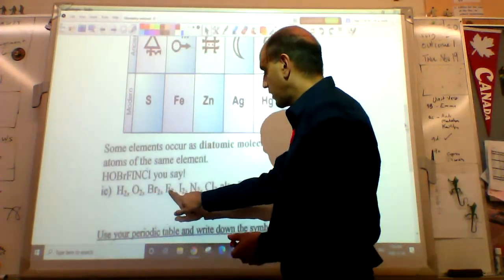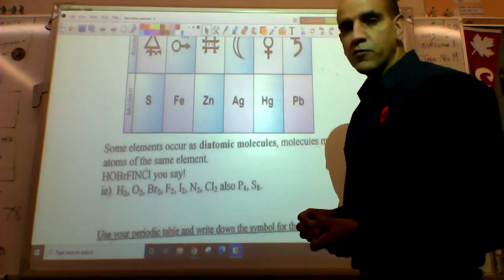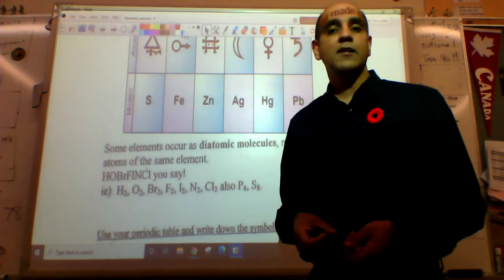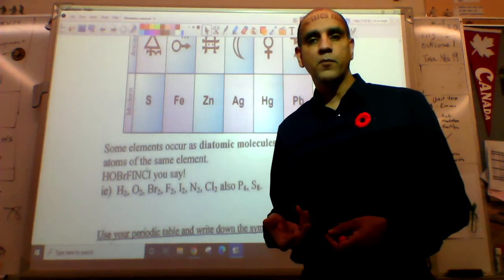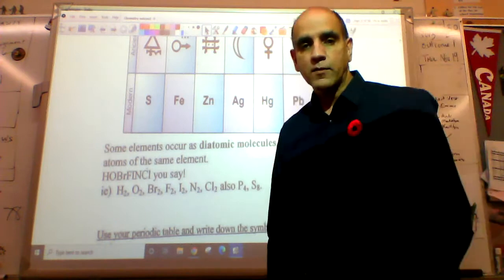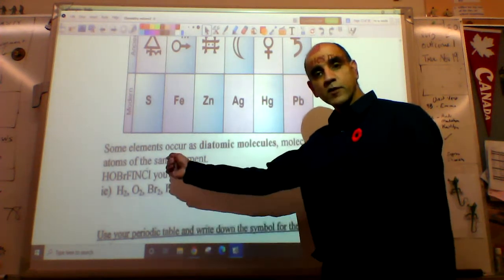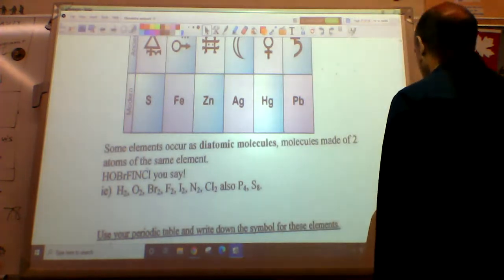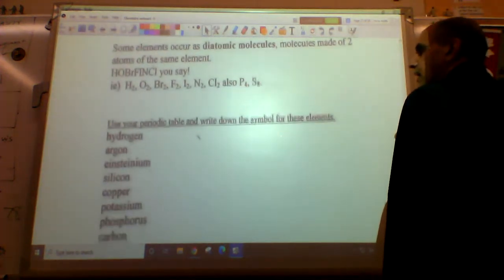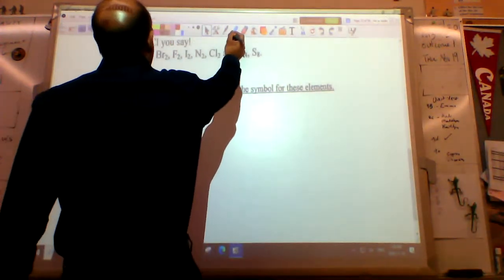The formula for chlorine is Cl2. Chlorine always exists as a double. I have oxygen with the double bonds - oxygen is always O2. So H2, O2, Br2, I2, F2, I2, N2, Cl2, also P4 and S8. Those are elements that are more stable if they form with multiple atoms joined together.